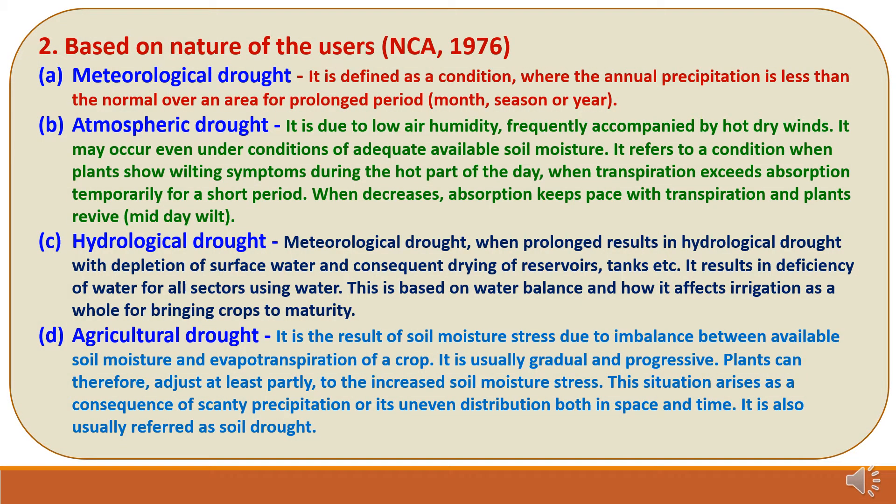Classification of drought based on nature of users, as described by the National Commission on Agriculture in 1976, is of four types. First is meteorological drought, defined as a condition where the annual precipitation is less than normal over an area for a prolonged period — month, season, or year. Second is atmospheric drought, which is due to low air humidity, frequently accompanied by hot dry winds. It may occur even under conditions of adequate available soil moisture, referring to a condition when plants show wilting symptoms during the hot part of the day when transpiration temporarily exceeds absorption.